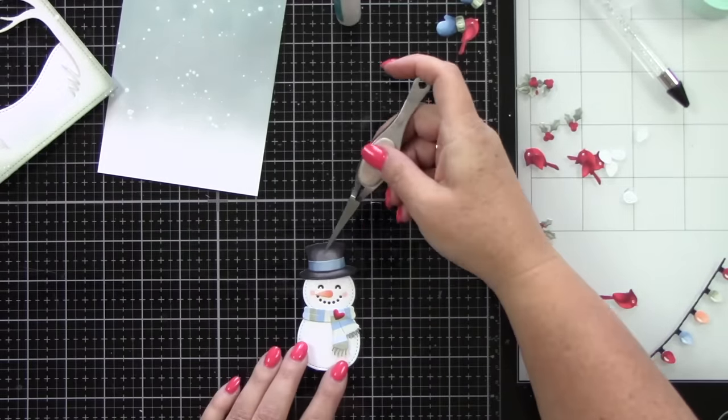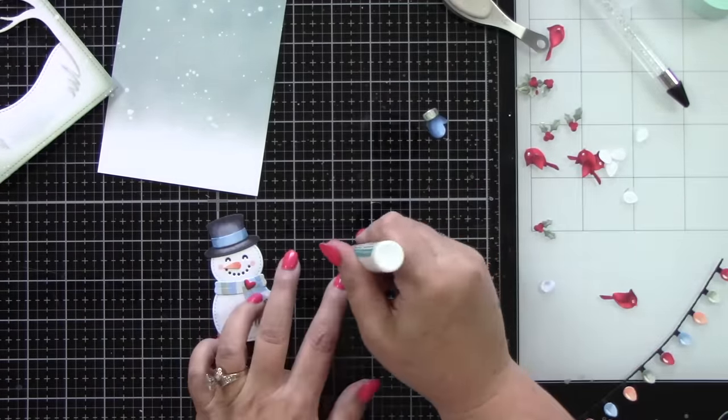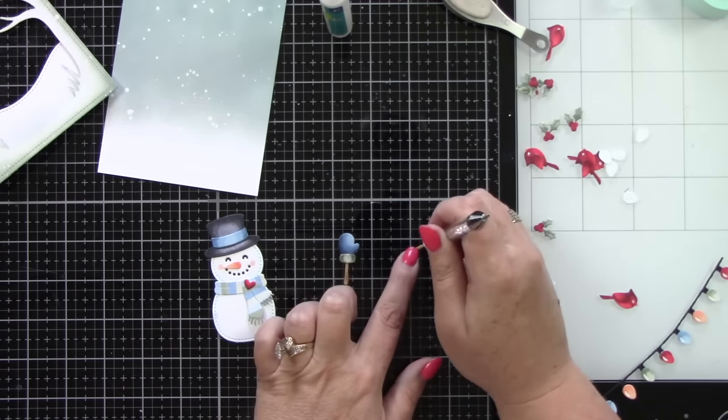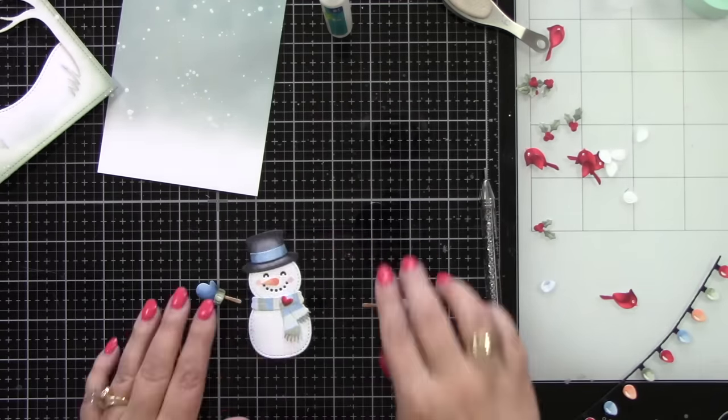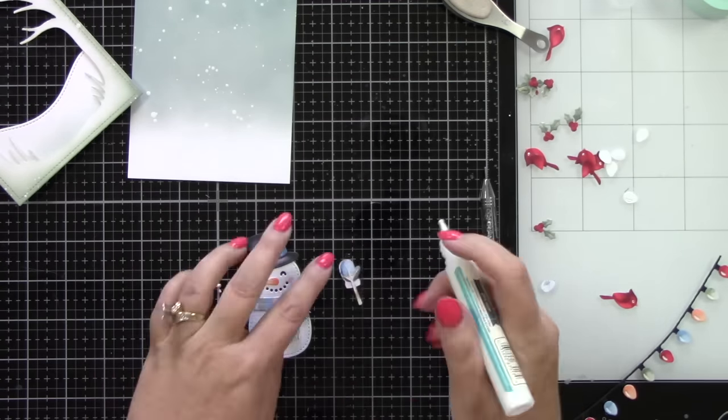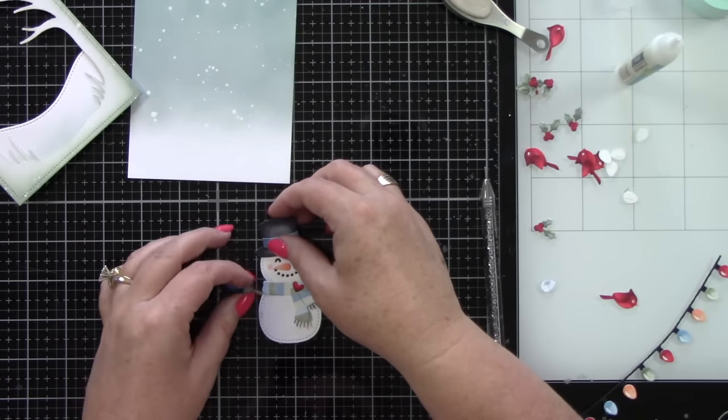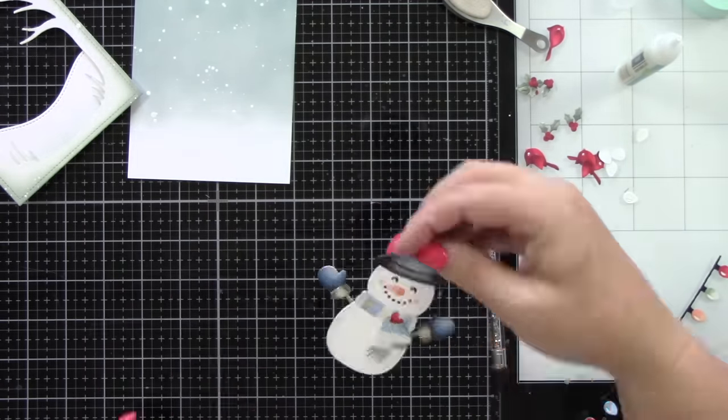Now we can finish putting my snowman together. I did kind of lay it out off camera. Here's his little cute little arms, little stick arms. We're going to put his mittens on there. And then we can tuck him into his body. Now the arm on the left, I want him to be holding a bird. So I'm going to have that one out a little more straight and the other one will be up just a little bit.